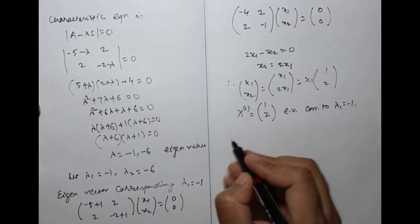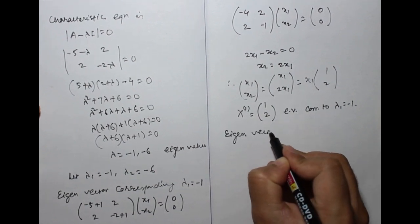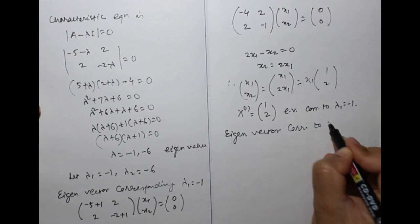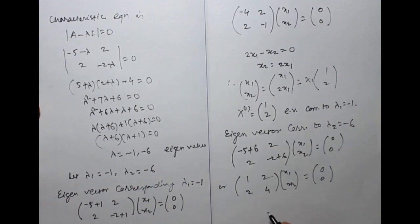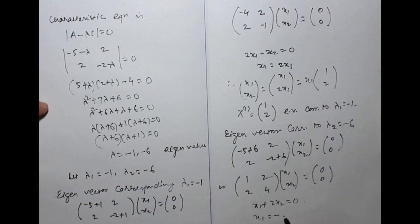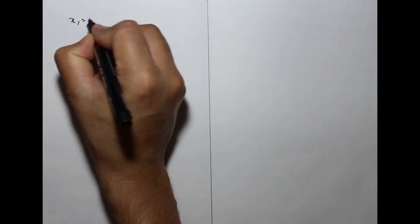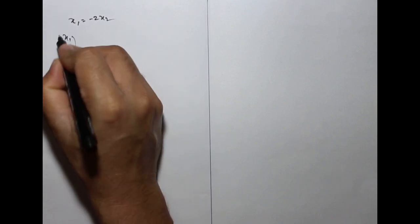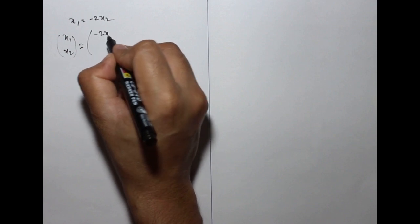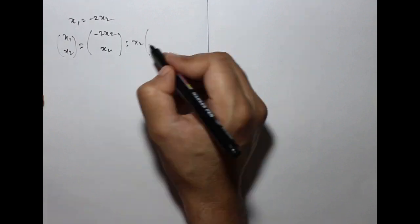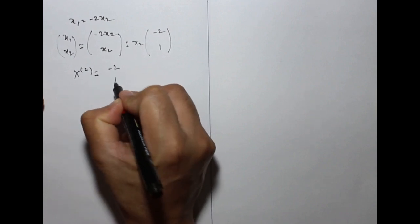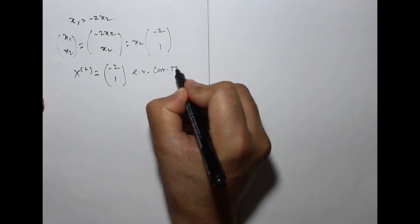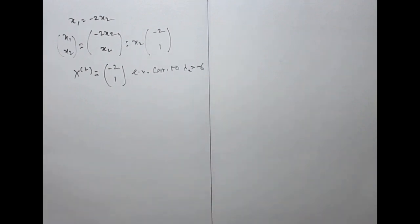Similarly, for the eigenvector corresponding to λ2 = −6: substituting gives x1 = −2x2. Taking x2 = 1, the eigenvector is [−2, 1]. These are the two eigenvectors corresponding to the two eigenvalues.